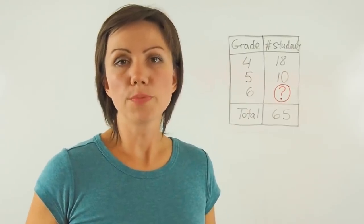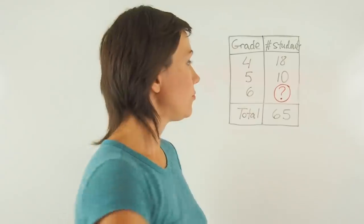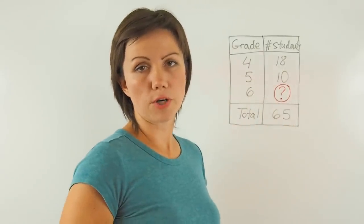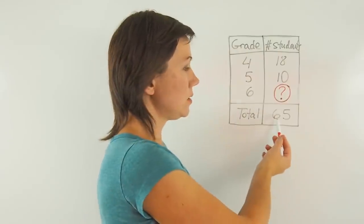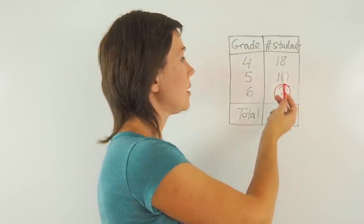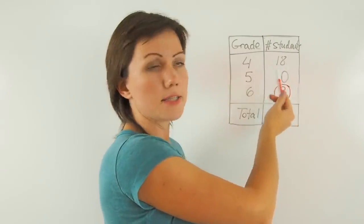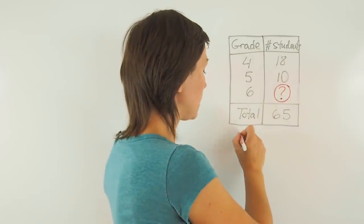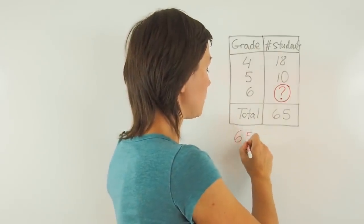In order for me to solve this problem, I need to first find the numeric value of the number of students from grade 6. The total number of students here is 65. The grade 4 students are 18 and the number of grade 5 students is 10. So I will subtract those numbers from 65.